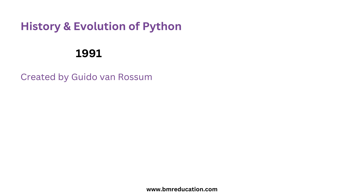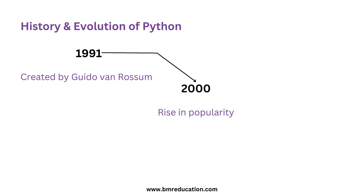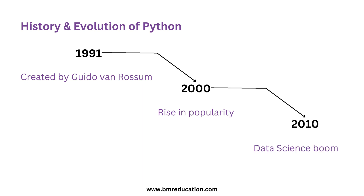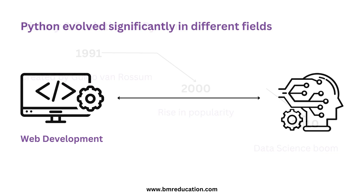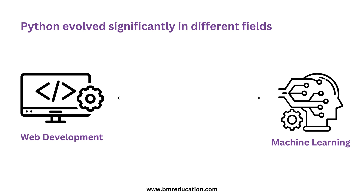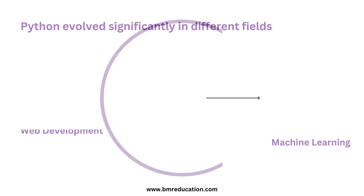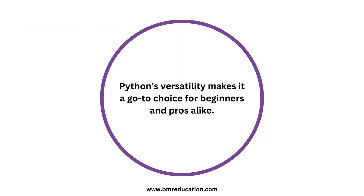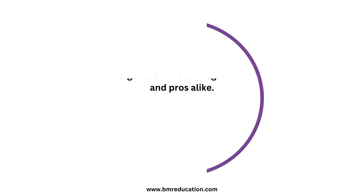Python was created in 1991 by Guido van Rossum. Since then it has evolved tremendously, carving out its space in virtually every tech domain — from building websites to crunching data and machine learning. Python's versatility makes it a go-to choice for beginners and professionals alike.